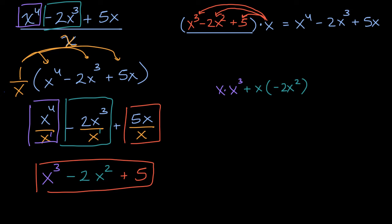And then I could write this five x as being equal to plus x times five. And then I'm going to divide everything by x. Divide everything by x. I just rewrote the numerator here. But for each of those terms, I factored out an x.